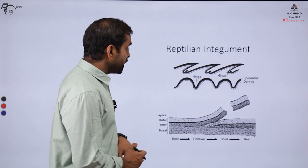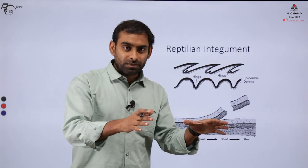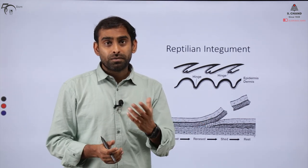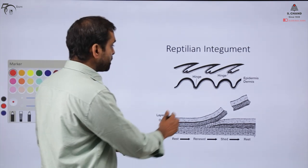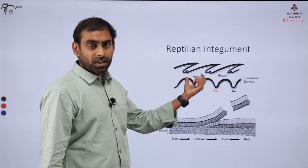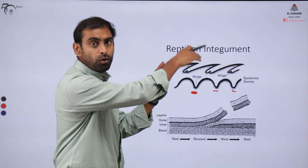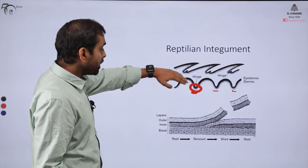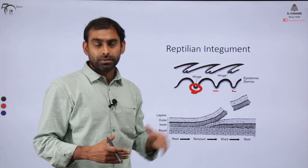Looking at reptilian integument, they have a very specialized feature — very tough skin. Crocodile skin, for example, has a very tough covering that can also deter enemies. The toughness of reptilian skin comes from specialized structures called folds. During embryonic development, the epidermis and dermis layers get folded, and a part called the hinge develops. The hinge allows the skin to continuously grow, get thickened over time, and enables the shedding of the skin.